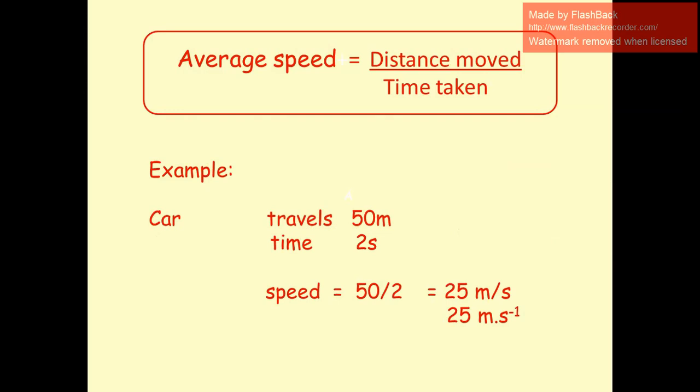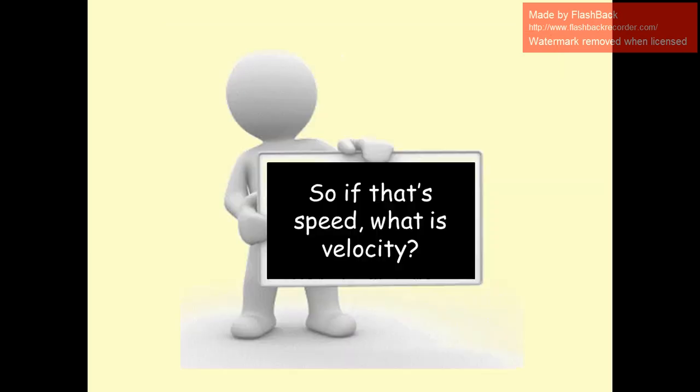For example, if a car is traveling 50 meters and it takes two seconds, its speed can be calculated from the formula: distance divided by time, which is 50 divided by 2 seconds. This gives us 25 meters per second.